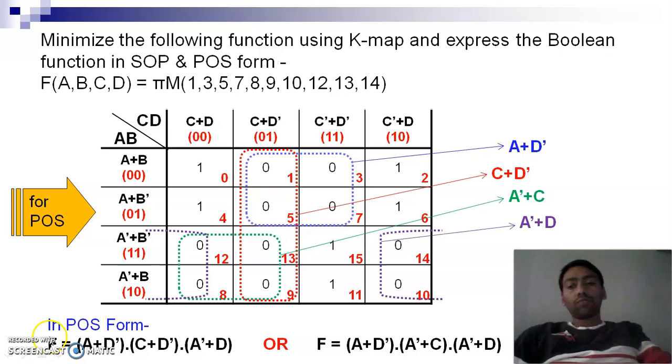This one can be a pure expression for the given problem or this one can be a solution for the given problem. So both solutions are possible. Whichever pairing you do, you can simplify the question. Now in the question one more thing, if we look here, we have found the POS form but we also have to find the SOP expression.